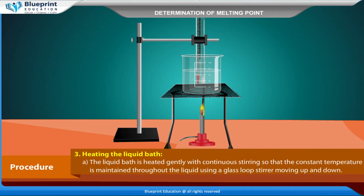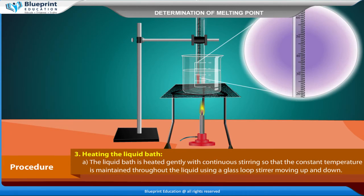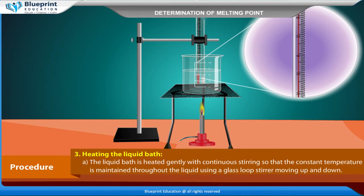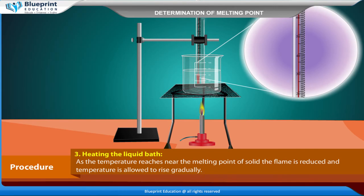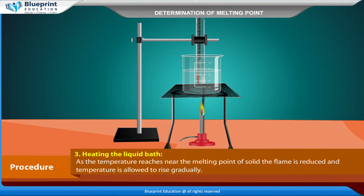Heating the liquid bath: The liquid bath is heated gently with continuous stirring so that a constant temperature is maintained throughout the liquid, using a glass loop stirrer moving up and down.